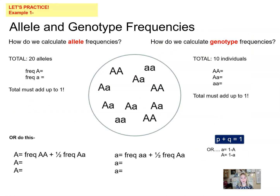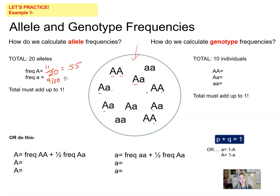Let's take a look at our first example — allele and genotype frequencies. Suppose you've been given the entire population: all alleles and all genotypes are presented to you. To find allele frequencies, you literally count the alleles. We have a total of 20 alleles. Counting big A gives us 11, so the frequency is 11/20 = 0.55. Counting little a gives us 9, so the frequency is 9/20 = 0.45. Notice those two frequencies add up to 1 — all alleles in the gene pool are accounted for.